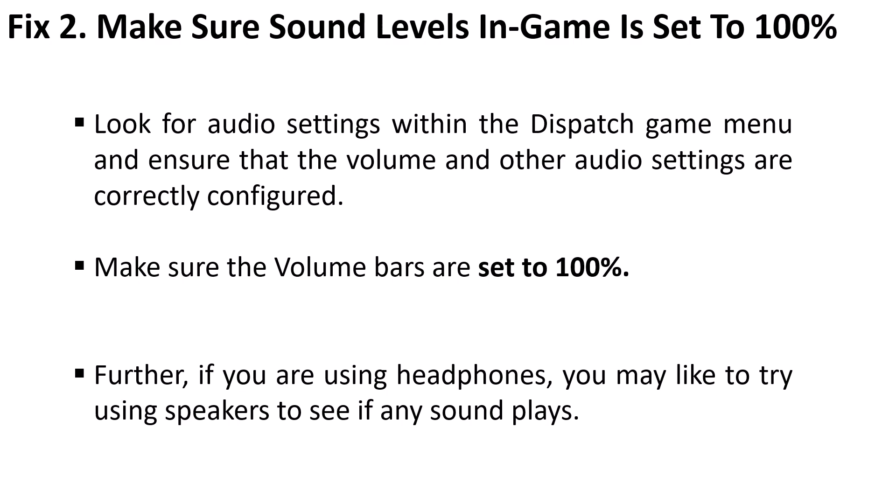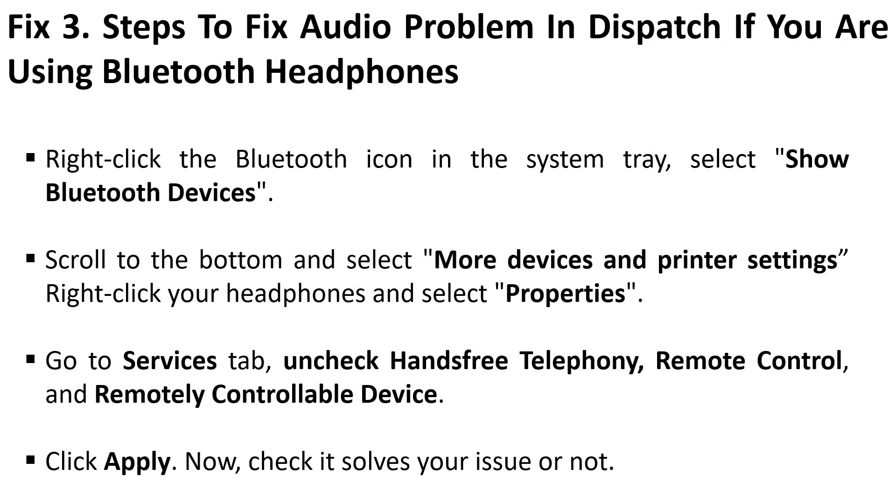Additionally, if you are using headphones, you may want to try using speakers and see if that helps. Fix three: to fix the audio problem in Dispatch game if you are using Bluetooth headphones — right-click on the Bluetooth icon in the system tray, then select Bluetooth Devices. Scroll to the bottom and select More Devices and Printer Settings. Right-click your headphones and select Properties. Now go to the Services tab and uncheck Hands-Free Telephony, Remote Control, and Remotely Controllable Device.